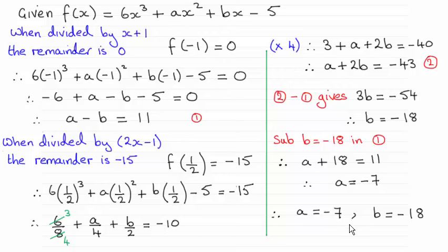And you can see that a turns out to be minus 7 and b turns out to be minus 18. So I'll take you through this, just in case there were any problems.